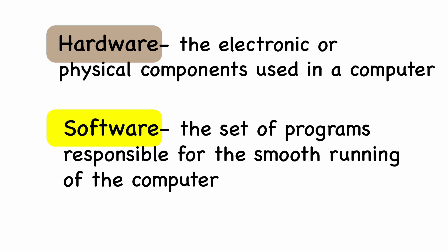The electronic or physical components that are used in a computer are called hardware. The set of programs responsible for the smooth running of a computer system is called software.